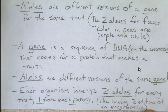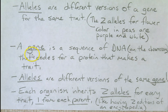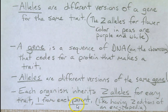Alleles are different versions of a gene for the same trait. Two alleles for flower color in peas are purple and white. A gene is a sequence of DNA on the chromosome that codes for a protein that makes a trait. Each organism inherits two alleles for every trait, one from each parent — one allele from mom and one from dad. For example, you could get one allele for blonde hair from mom and one for brown hair from dad. Since brown is dominant over blonde, the child will probably have brown hair.